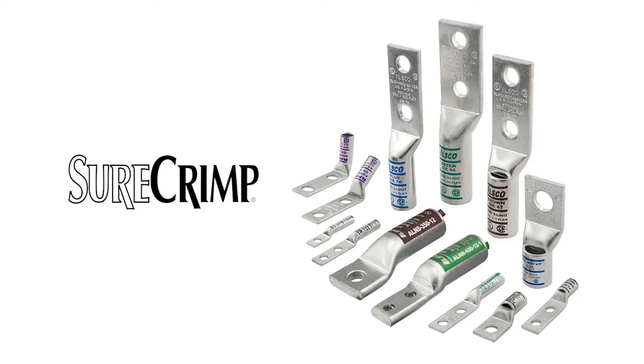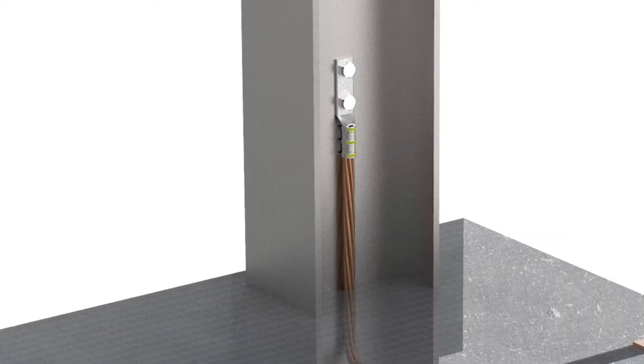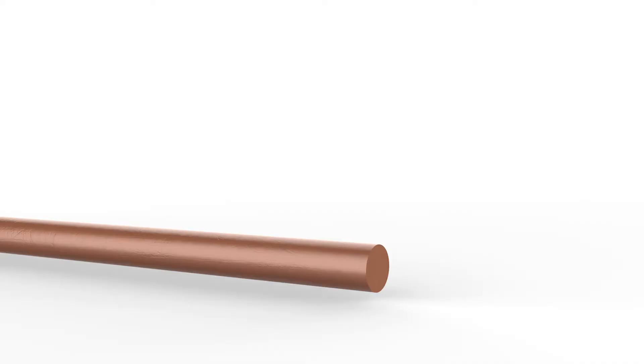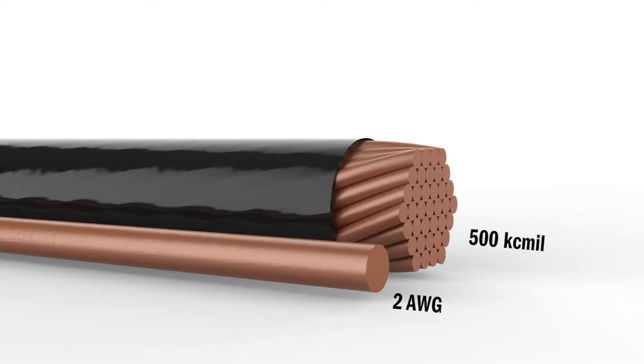Our SureCrimp copper compression connectors and splices are certified for grounding and bonding applications using solid conductors up to 2 AWG and stranded conductors up to 500 kcmil.